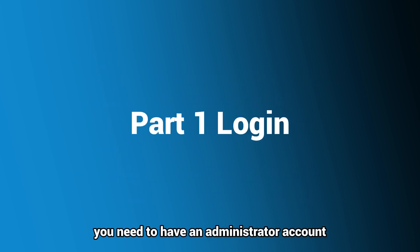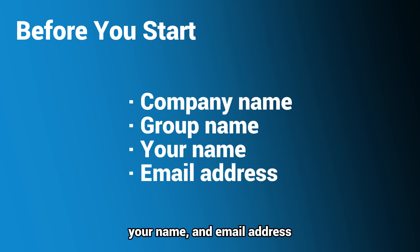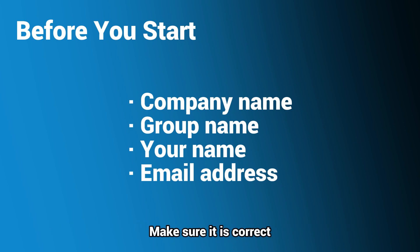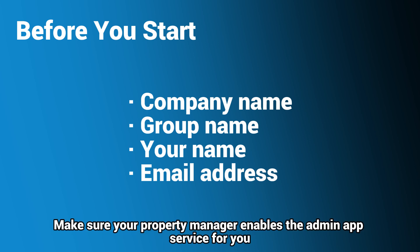Before logging in, you need to have an administrator account. Provide the following information: company name, group name, your name, and email address. The email address is used to receive the account username and password — make sure it is correct. If you'd like to use your mobile phone number for login and password reset, provide it as well. Make sure your property manager enables the Admin app service for you.